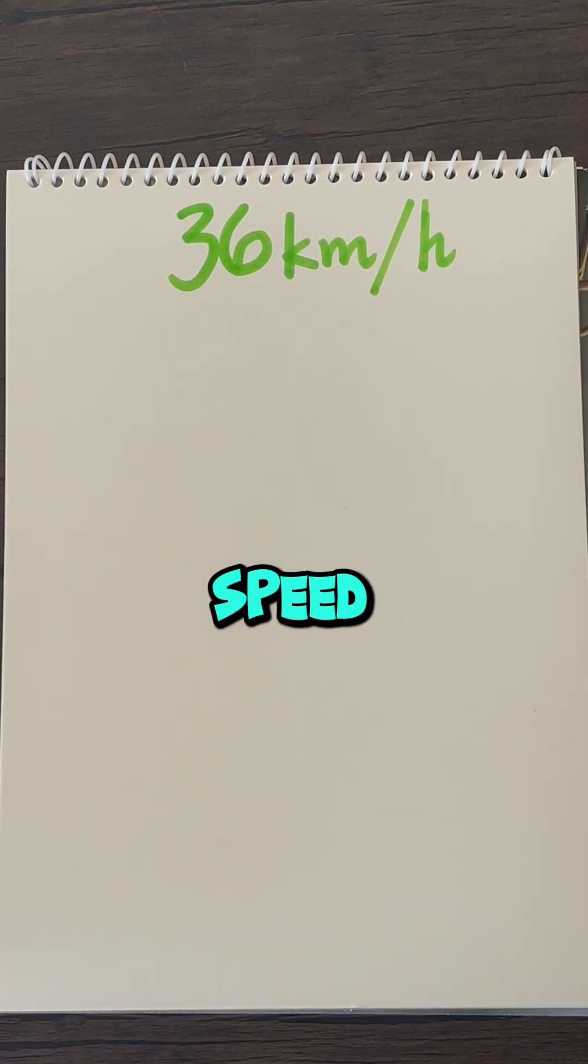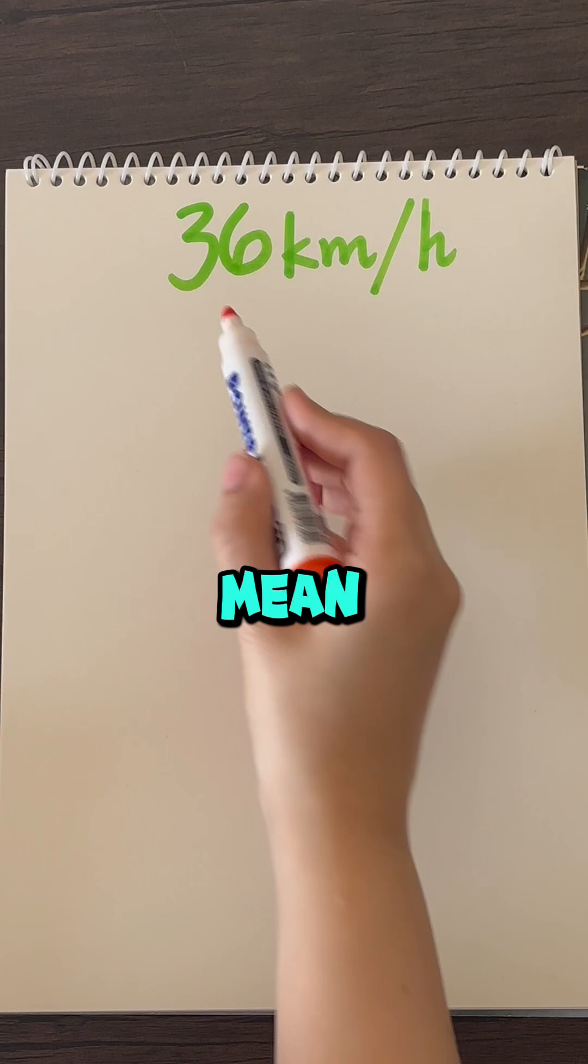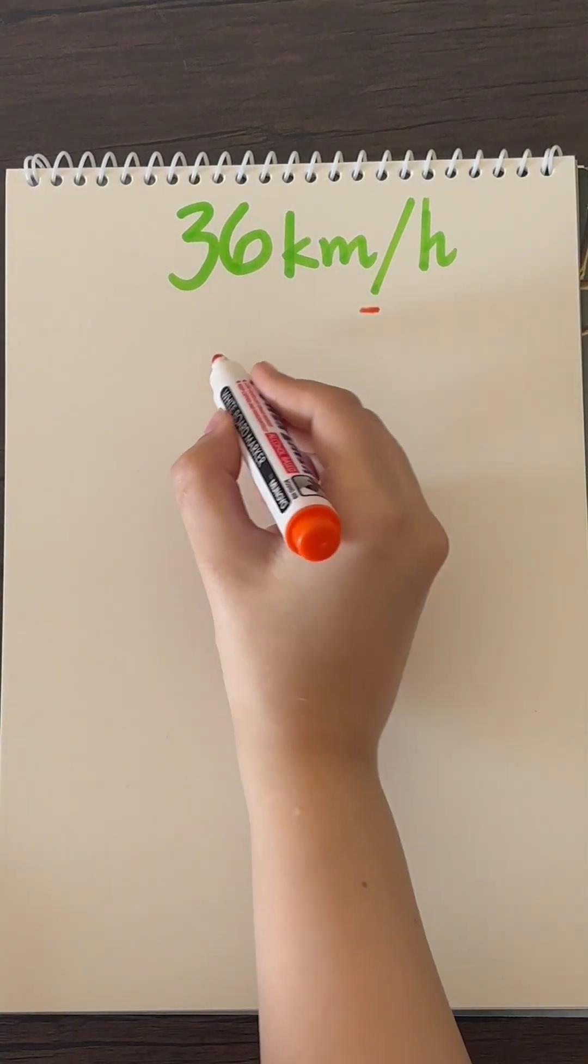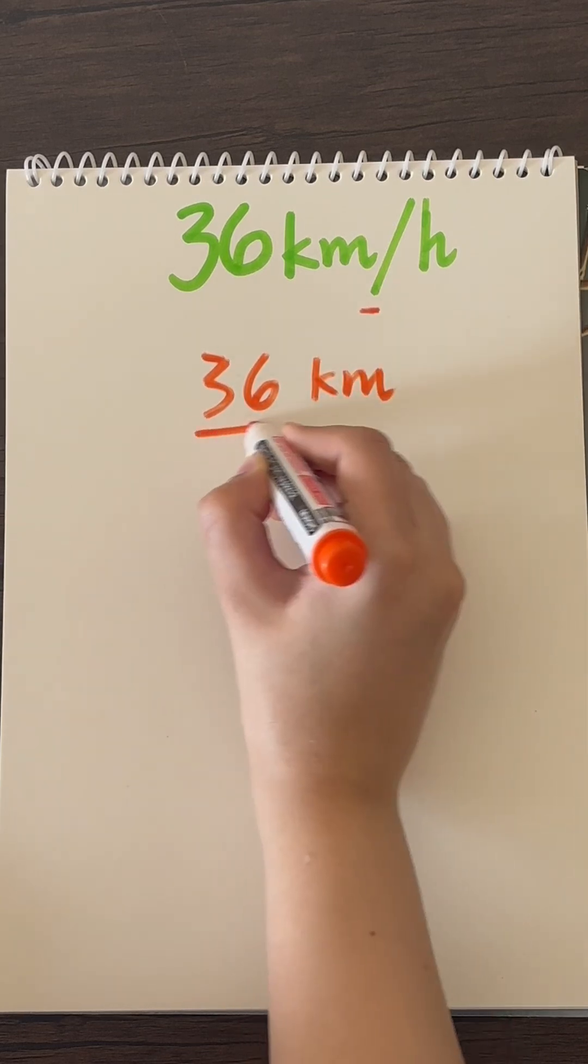Now, if you're traveling at that speed, what does that actually mean? You're traveling 36 kilometers for every hour. This is a division sign, so doing 36 kilometers per one hour.